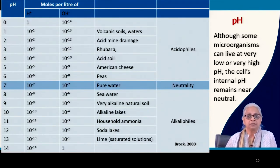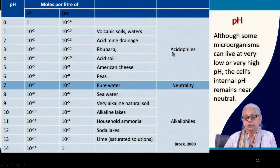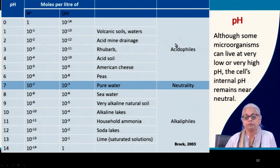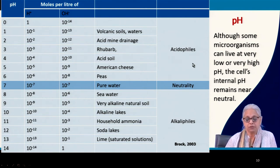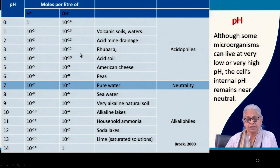Let's now come to the next environmental factor — pH. In the table, you see the pH scale from 0 to 14, in terms of concentration of protons and hydroxide ions, and the classes of microorganisms that can survive. An organism that tolerates acidic conditions is called an acidophilic organism; one that survives high pH conditions is called an alkaliphile. Acidophilic bacteria are found in volcanic soils, acid mine drainage, certain foods, certain soils, cheese, and peas.